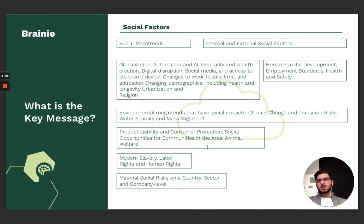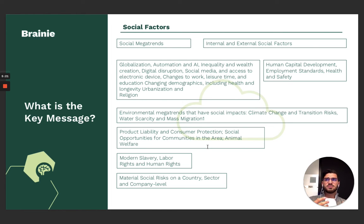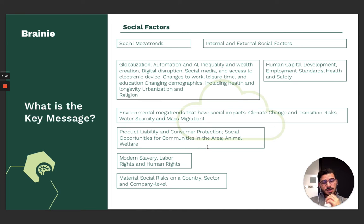The chapter further talks about the relationship between social issues and business activities. There are two dimensions: the internal and the external social factors. Internal has to do with issues within the firm, so this includes topics like human capital development, employment standards, and health and safety. It tries to address the questions of how companies treat their employees, who are an important stakeholder. In this chapter you will also be introduced to the concept of modern slavery, labor rights and human rights, and initiatives that have been established in that regard. On the other side, we have the external factors.